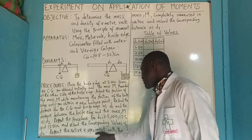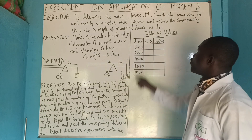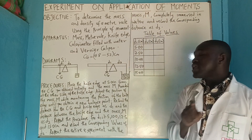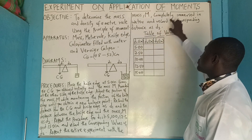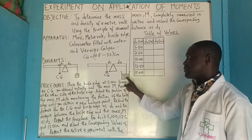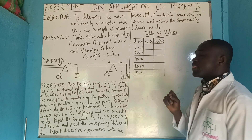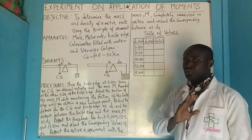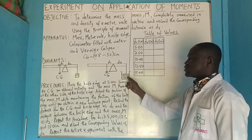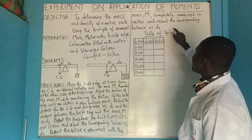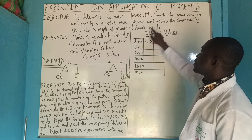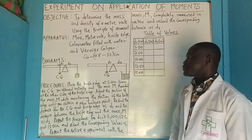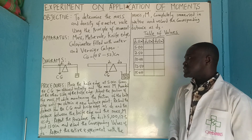Then repeat the entire experiment with the mass m completely immersed in water. When immersing it in water, we need to talk about density, upthrust, and Archimedes' principle. Record the corresponding distance as D3.